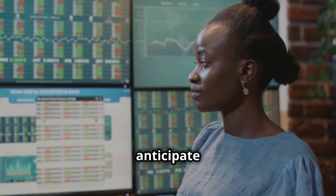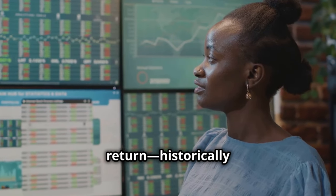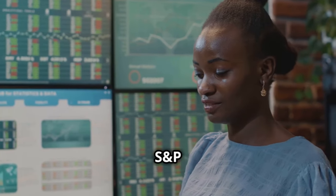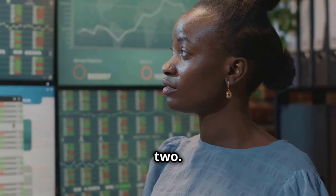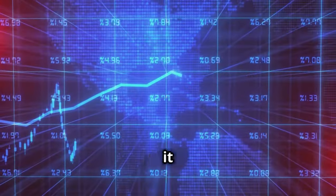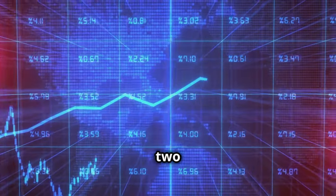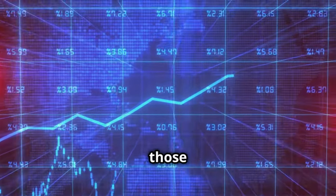For instance, if you anticipate a 10% annual return, historically close to the average return of the S&P 500, you calculate 72 divided by 10 equals 7.2. This means that on average, it should take approximately 7.2 years for your investment to double under those conditions.